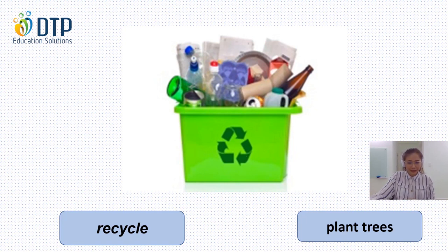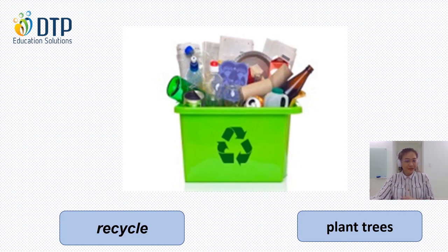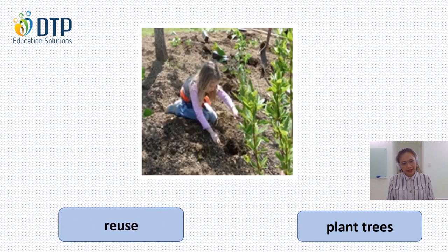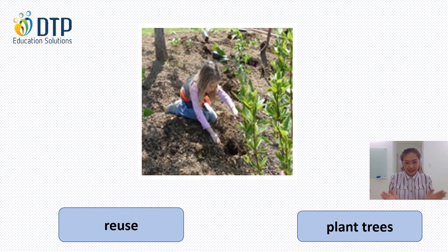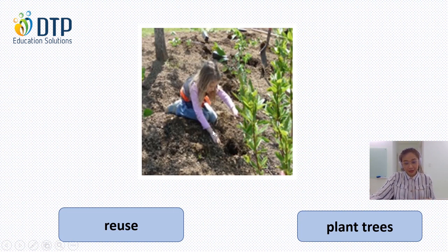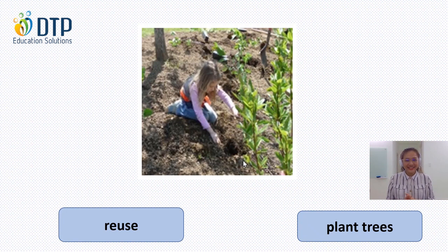Where do you usually see this sign? You can see it on rubbish bins. Now let's move on. In this picture, whether it's reuse or plant trees — is this plant trees? Yes, because we can see the little girl is planting trees. Very good. So everybody, let's move on to the reading activity.